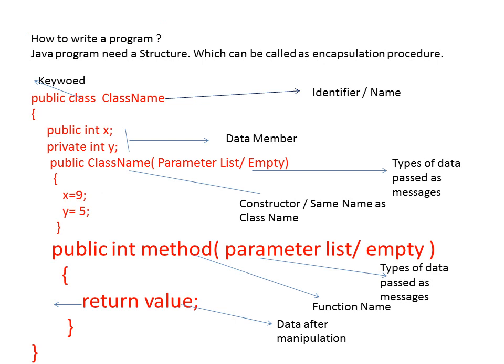What is a Java program and how do you write one? A Java program needs a structure, which can be called an encapsulation procedure. We write the class name and keep everything inside the class — data members, constructor, and functions are all inside a class. To start a class, we write the access specifier first, then we use the keyword 'class', and then we write the class name.